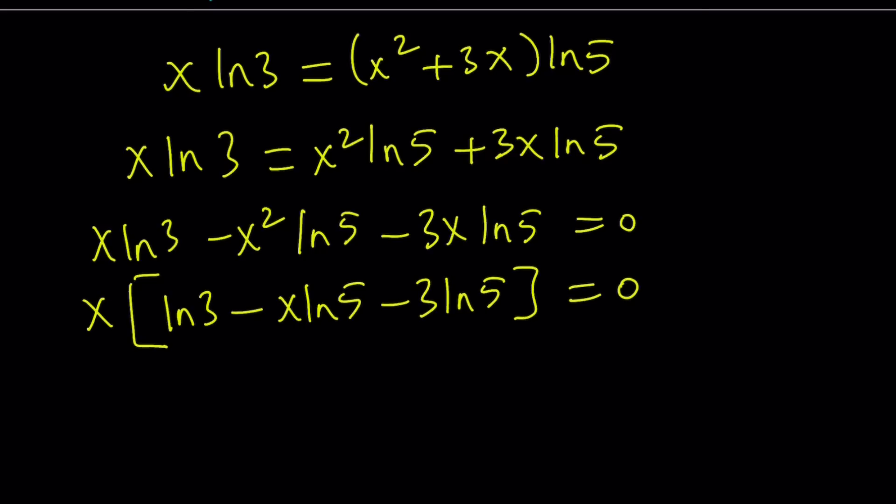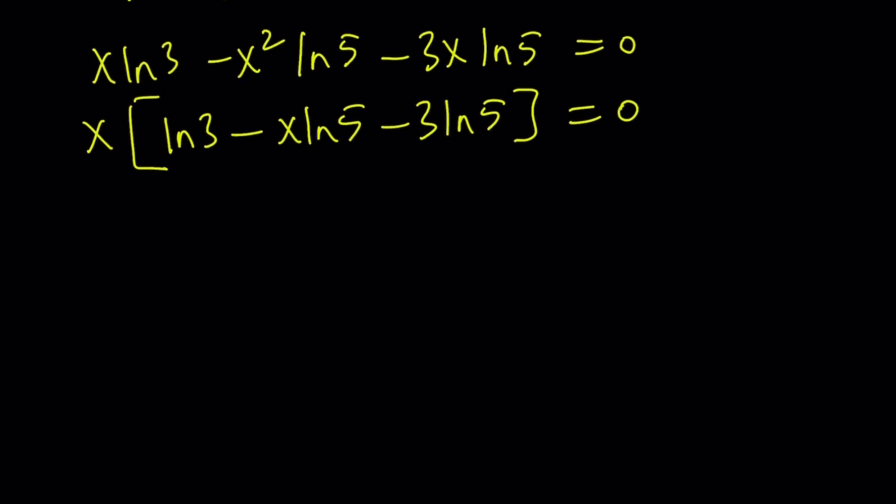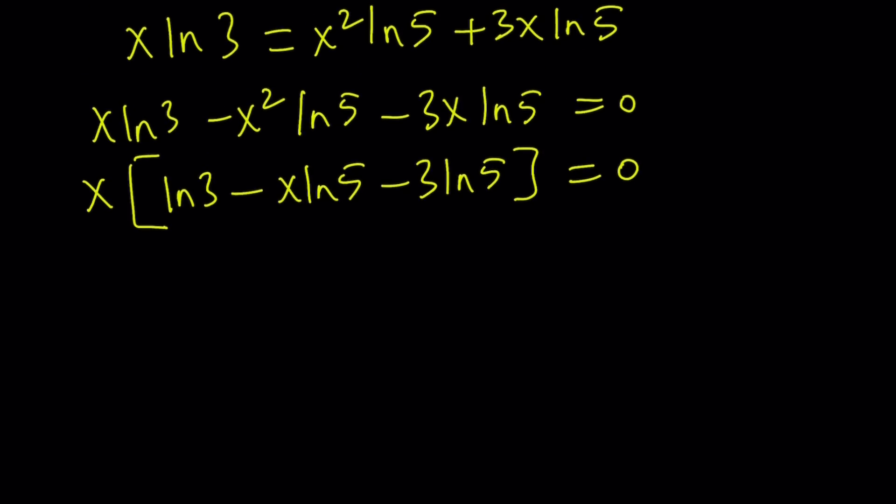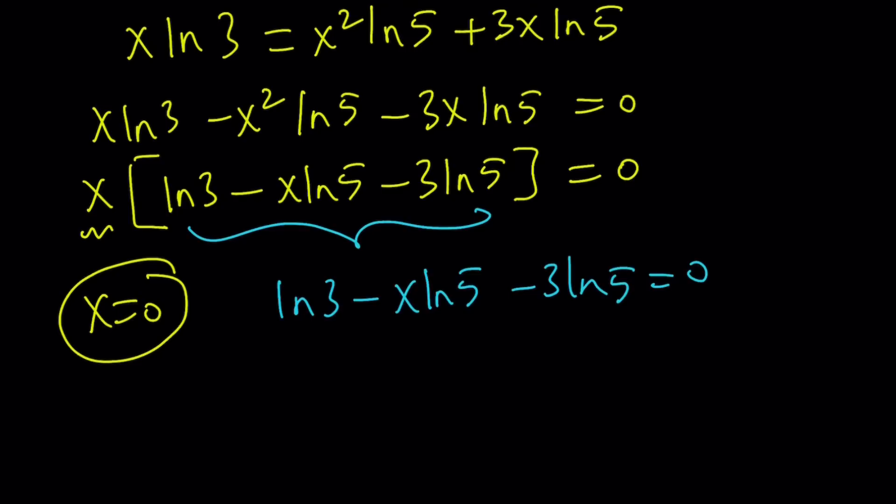Now, using zero product property, which I think is a real weird name, but anyways, we get x equals 0. Because if x is 0, this is going to work. So, x equals 0 is a valid solution. And the other solution basically comes from the other factor by setting that equal to 0. So, let's go ahead and set the second factor equal to 0. And from here, since I'm trying to solve for x, it makes sense if I get the x term on one side and everything else on the other side. So, kind of like this.